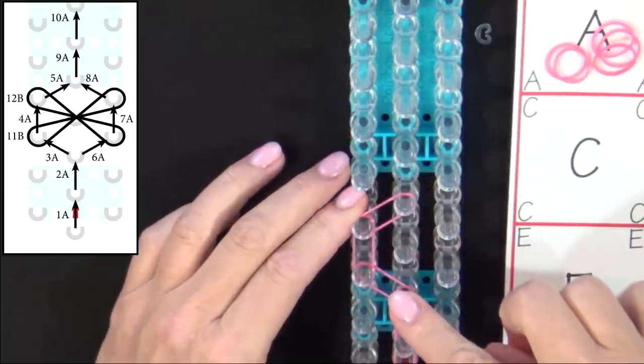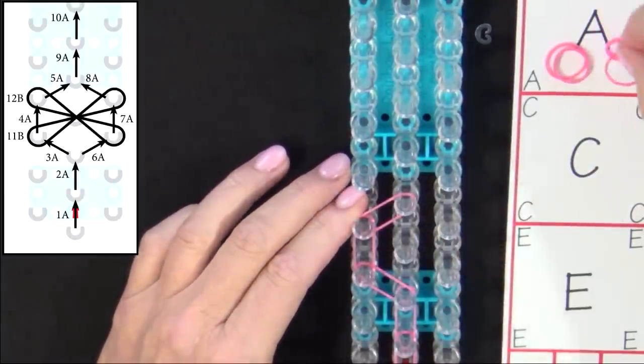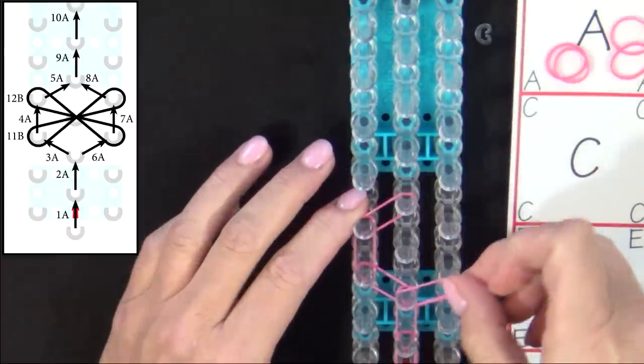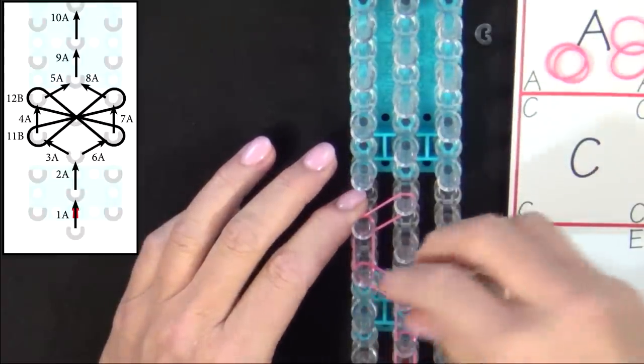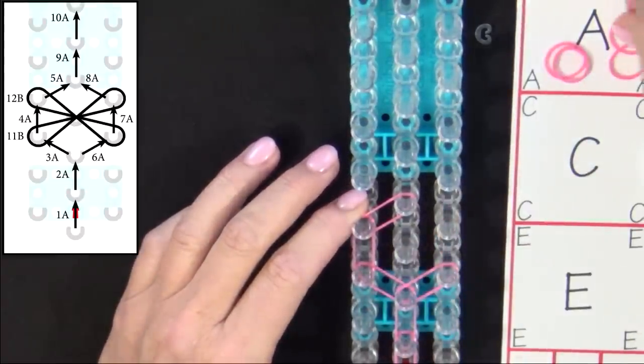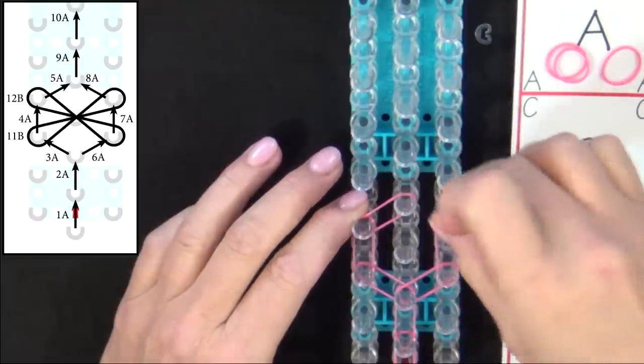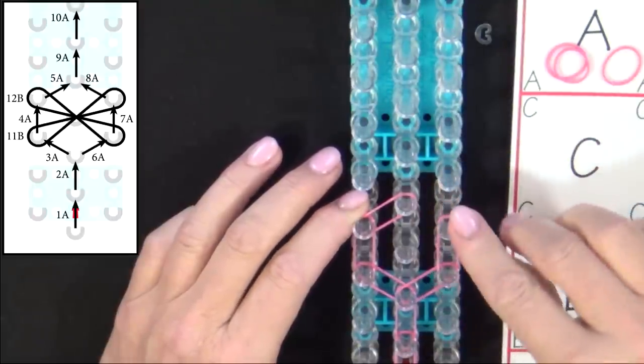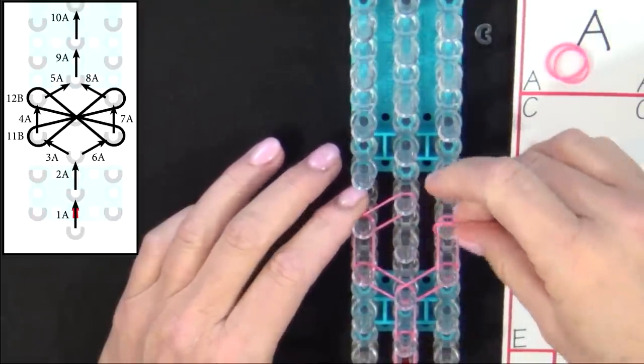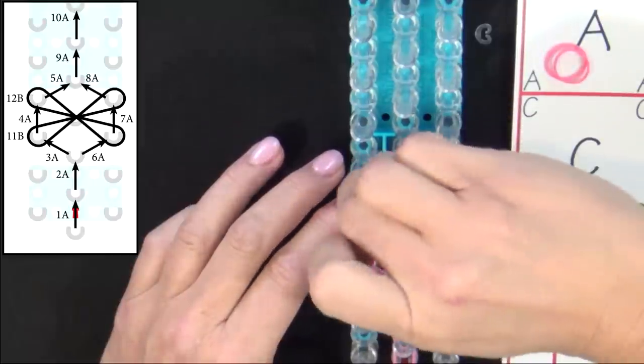Then we return back to this pin. Band 6A will extend out to the right. 7A will go up the right side of the loom. And 8A will turn into this center pin.